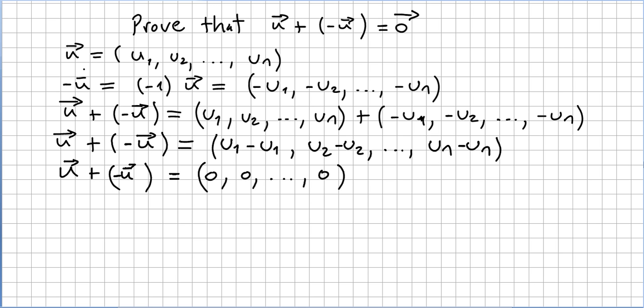So u is the vector with components u1, u2, u3, u n. Minus u is the vector u, this same vector multiplied by the scalar minus 1. So this will be minus 1 times the components. So minus u will be the vector minus u1 minus u2 till minus u n.